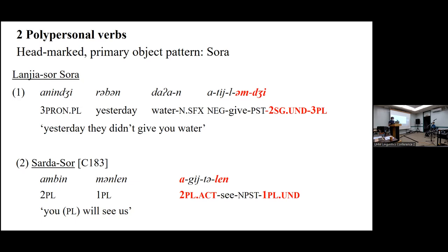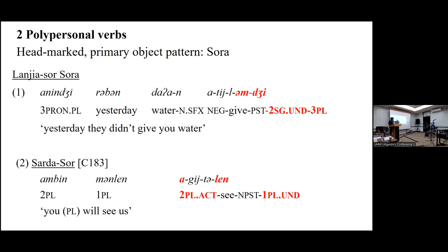For example, 'yesterday didn't give you any water' — here we have the third plural clitic at the end, and then the second person marker for the undergoer or object. Here we see the other pattern: the personal pronoun subject and then the object at the end. So this is the typical pattern I was just describing.